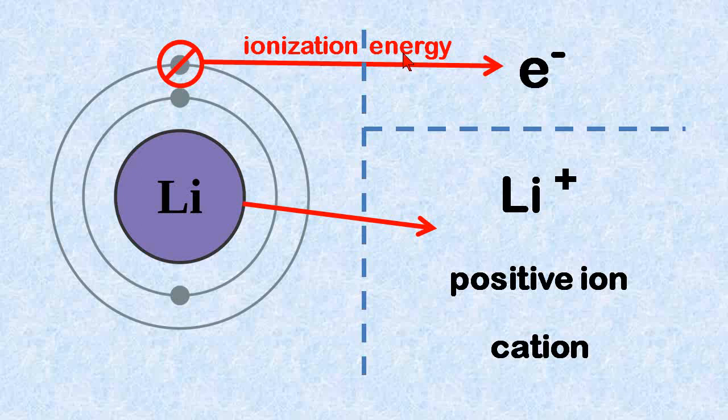So the energy required to remove this electron is called ionization energy. And you get an electron, and then this lithium atom becomes a lithium ion, specifically a positively charged ion called a cation. And it's represented with the symbol Li and a plus.